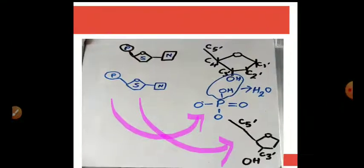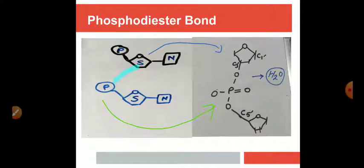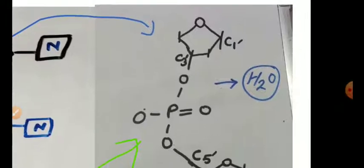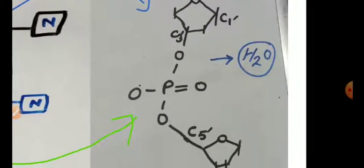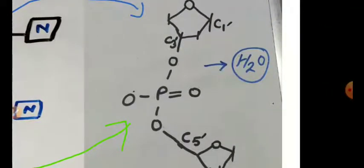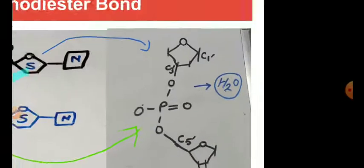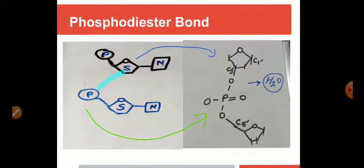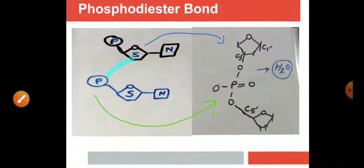How can you see? This phosphate has been released with the first sugar and the water molecule has been released. So this one is your phosphodiester bond.